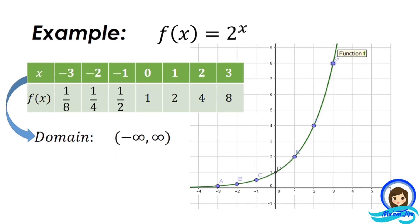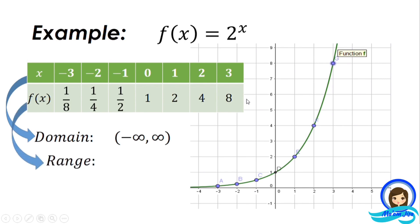The range, as you can see from the table of values and the graph, approaches 0 as more negative x values are added — the graph gets closer to 0 but does not touch it. And as positive x values increase, the values become larger. Therefore, the range is from 0 to positive infinity.